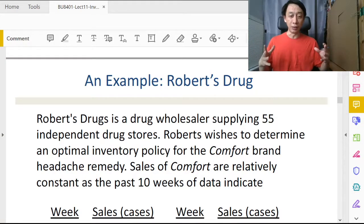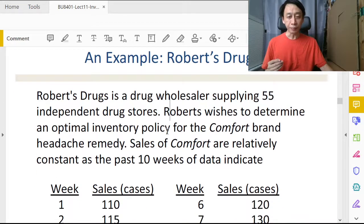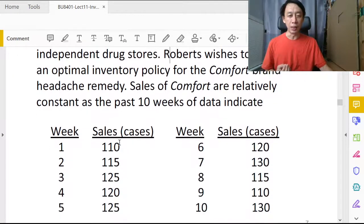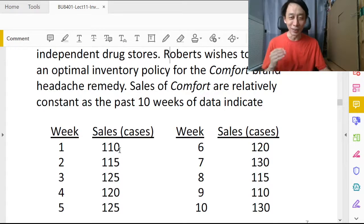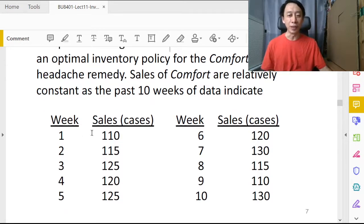Just now our example was tires, we were selling tires. Now let's look at this example where we are selling drugs. We would like to determine an inventory policy so that we can achieve as low a cost as probabilistically possible.